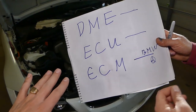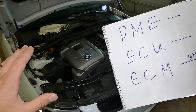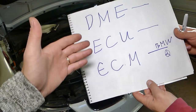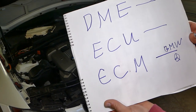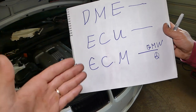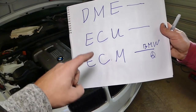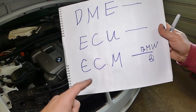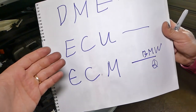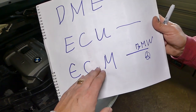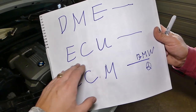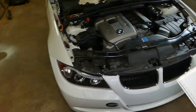If you're trying to find information about your car computer, always Google it or search on YouTube, because those three terms are interchangeable. Sometimes you can find information about your car computer listed under DME, or under ECU, or under ECM. So always use all three when searching.